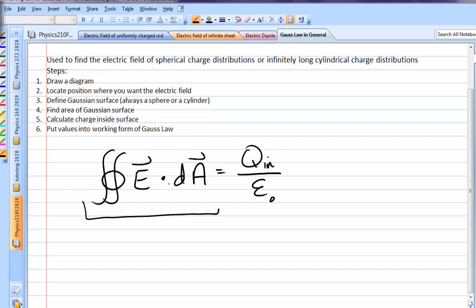The reason that we don't have to integrate the left-hand side is, first of all, notice this is a dot product. If the electric field is everywhere parallel to the area vector, that dot product disappears. If the electric field is constant everywhere on the area, the electric field comes out of the integral.